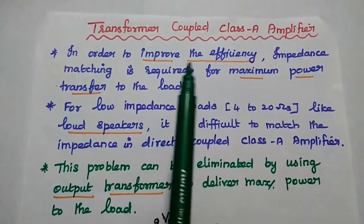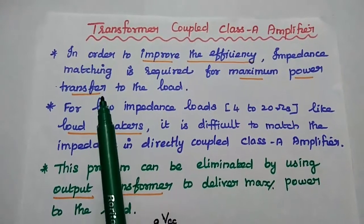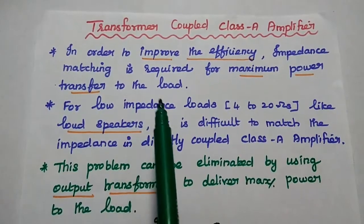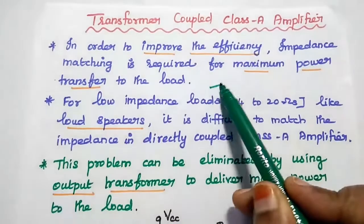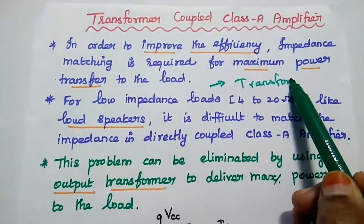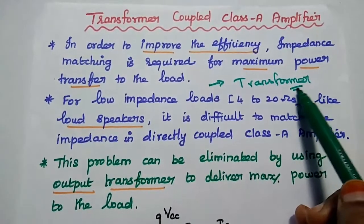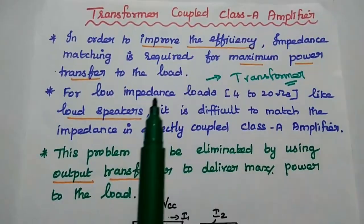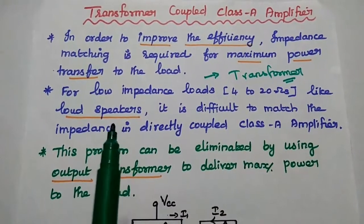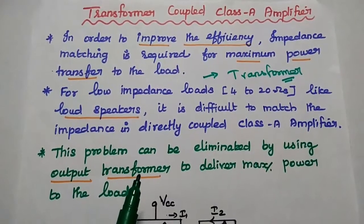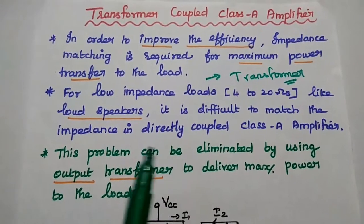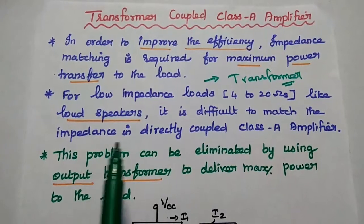Here, in order to improve the efficiency, impedance matching is required for maximum power transfer to the load. It can be achieved by using a transformer circuit. So in the output side, we are going to use a transformer circuit. For low impedance loads like loudspeakers, we are going to use a transformer to deliver maximum power. Here we are going to use a step down transformer.